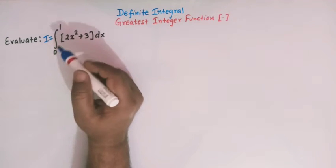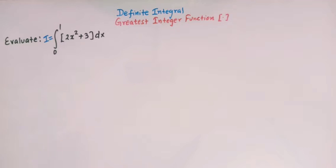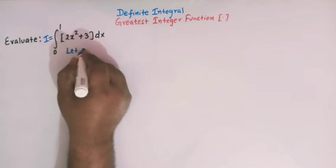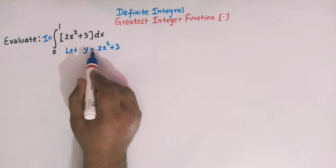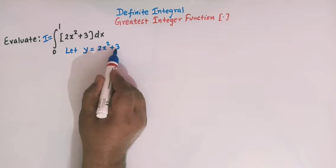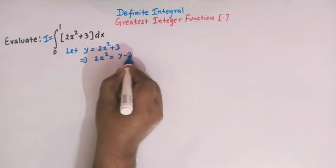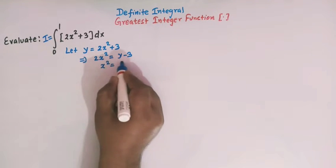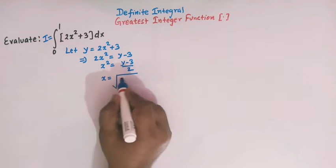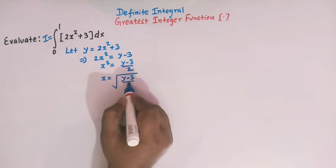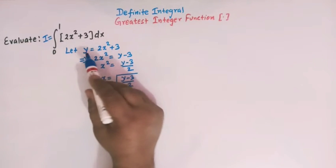This problem can also be solved by directly using properties of the greatest integer function, but here I will prefer the substitution method. So let us take y = 2x² + 3. When y = 2x² + 3, then 2x² = y − 3, so x² = (y − 3)/2, and x = √((y − 3)/2).